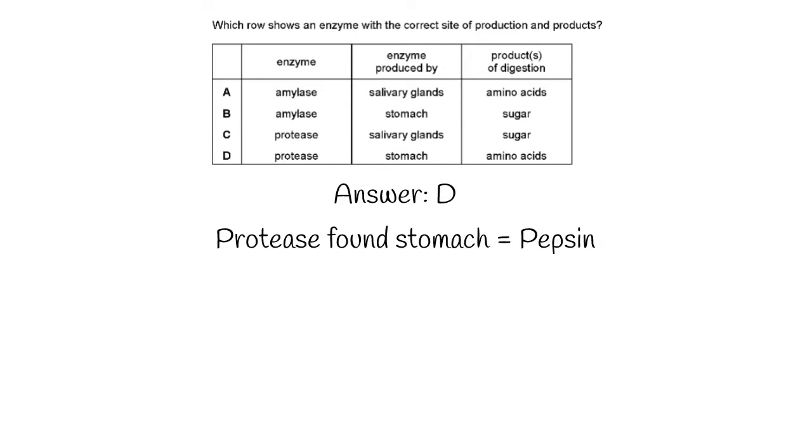The second question, the answer was D, because as we've talked about before briefly, the protease that you find in the stomach is called pepsin. And they, of course, break apart proteins into smaller amino acid units as with any other protease.